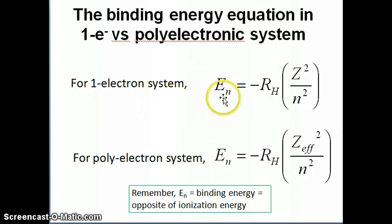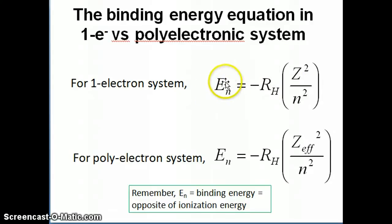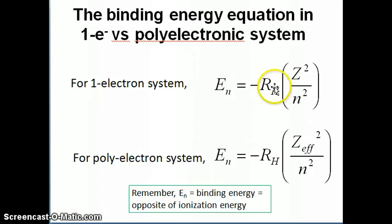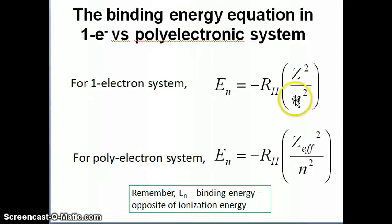For the one-electron system, the energy is given by this equation. E is the binding energy — the energy that binds the electron to the nucleus and keeps the electron in the atom. The binding energy equals negative of the Rydberg constant times Z squared over n squared, where Z is the atomic number and n is the principal quantum number.